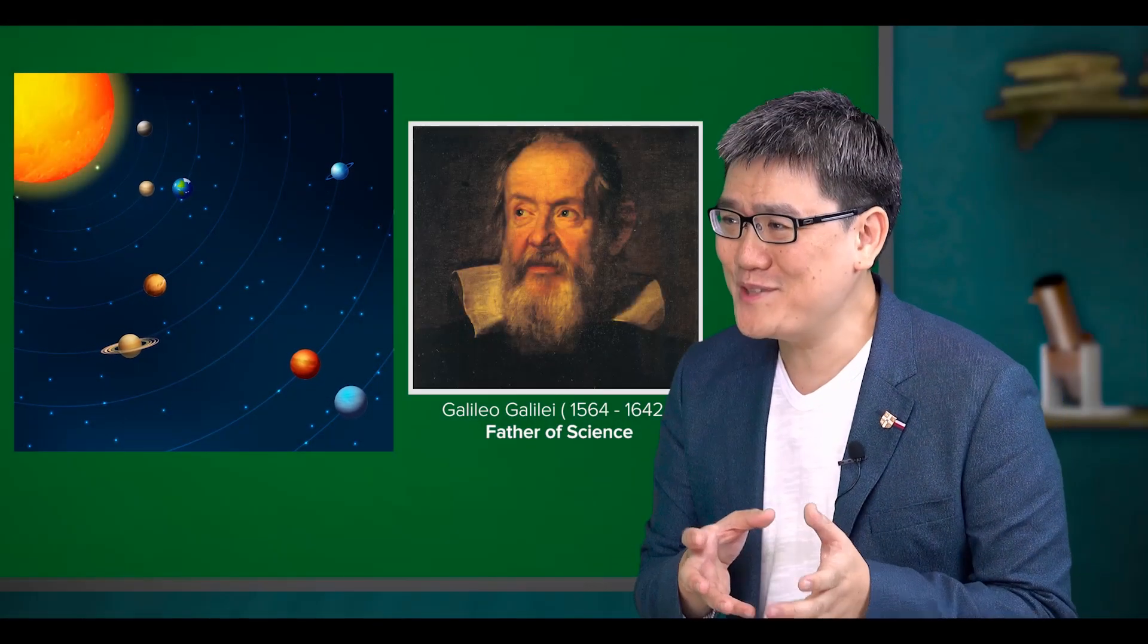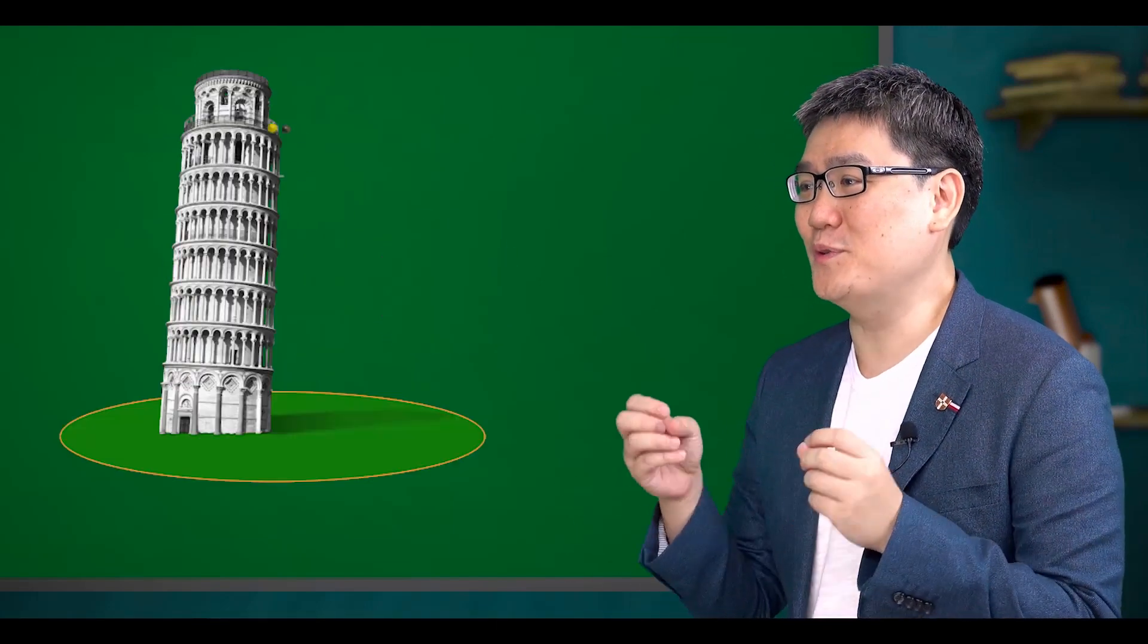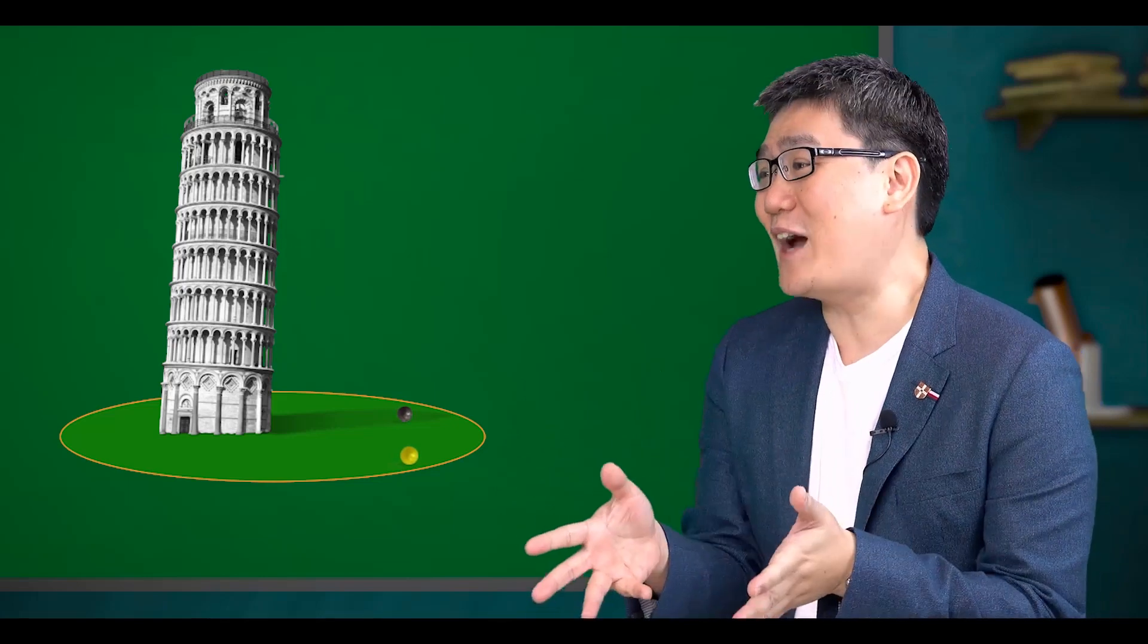Instead of using phones and erasers, he used a large and small cannonball of different mass and threw the two of them off the Leaning Tower of Pisa at the same time.